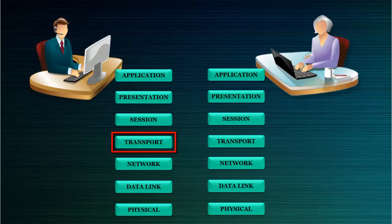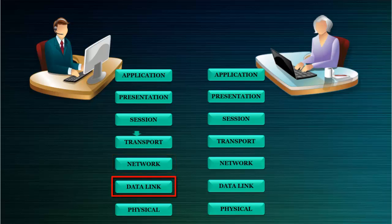The transport layer is going to convert this data into segments and forward it to the network layer. The network layer will convert these segments into packets and forward it to the data link layer. The data link layer is going to convert these packets into frames and forward it to the physical layer. The physical layer is going to convert these frames into binary bits, as computers understand only binary bits.